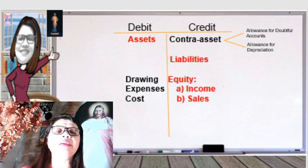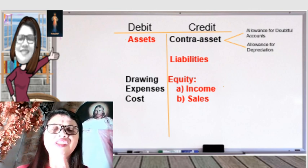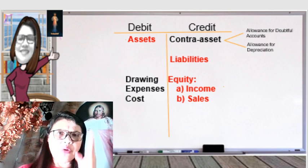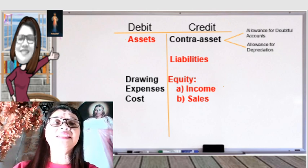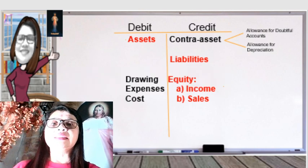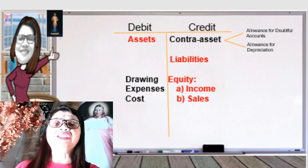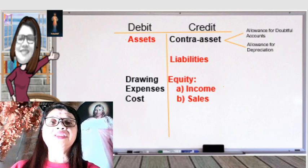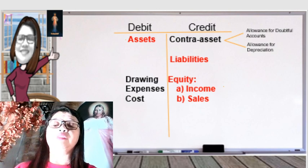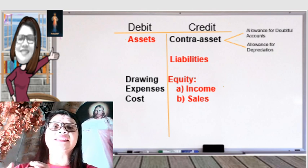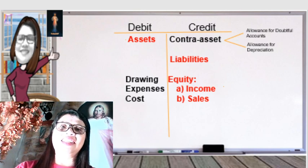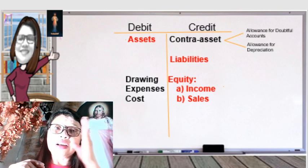Here is an illustration using a T-account for visual learners. On the left is your debit; on the right is the credit side. On the asset account, opposite it is a contra-asset account. We studied that contra-asset accounts are the allowance for doubtful accounts and allowance for depreciation. From the word itself — contra — it deducts your asset balances. So you credit to increase the contra-asset, and debit to deduct it.